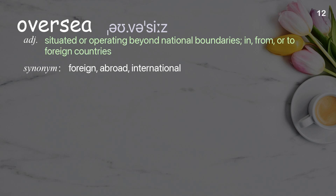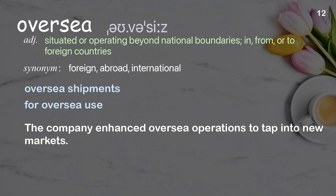Oversee. Situated or operating beyond national boundaries; in, from, or to foreign countries. Examples: oversee shipments, for overseas use. The company enhanced overseas operations to tap into new markets.